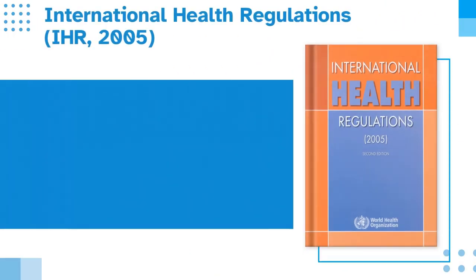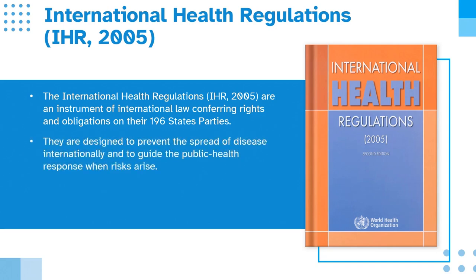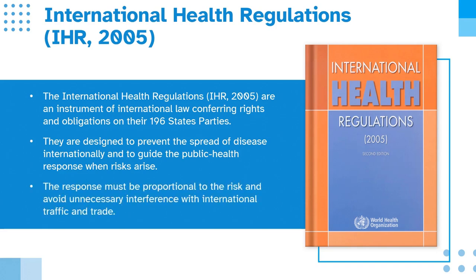What are the International Health Regulations? The International Health Regulations, IHR 2005 version, are an instrument of international law conferring rights and obligations on their 196 states parties. They are designed to prevent the spread of disease internationally and to guide the public health response when risks arise. The response must be proportional to the risk and avoid unnecessary interference with international traffic and trade.